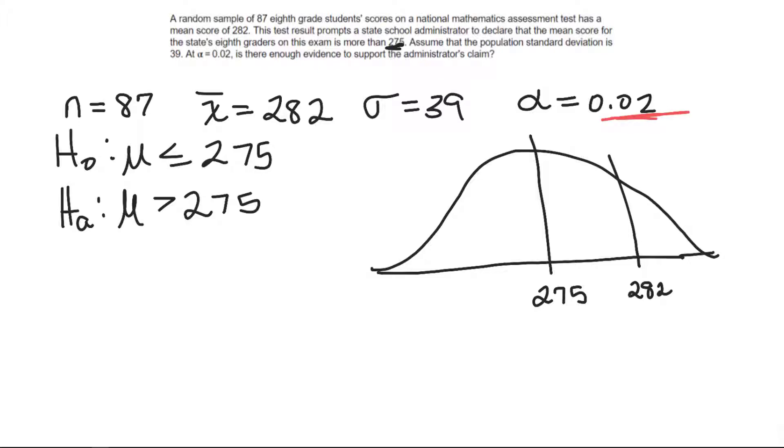That, your alpha, your significance. Is that far enough away to justify that we think the scores are getting higher?